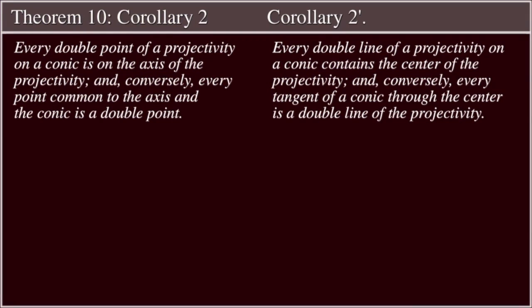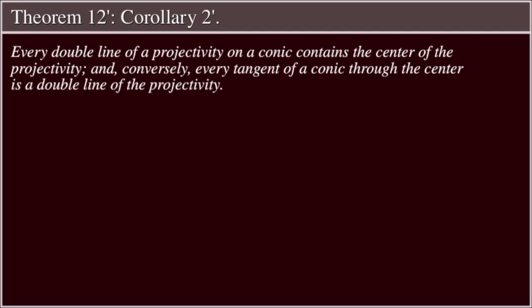Corollary 2: Every double point of a projectivity on a conic is on the axis of the projectivity. And conversely, every point common to the axis and the conic is a double point. Corollary 2': Every double line of a projectivity on a conic contains the center of the projectivity. And conversely, every tangent of a conic through the center is a double line of the projectivity.